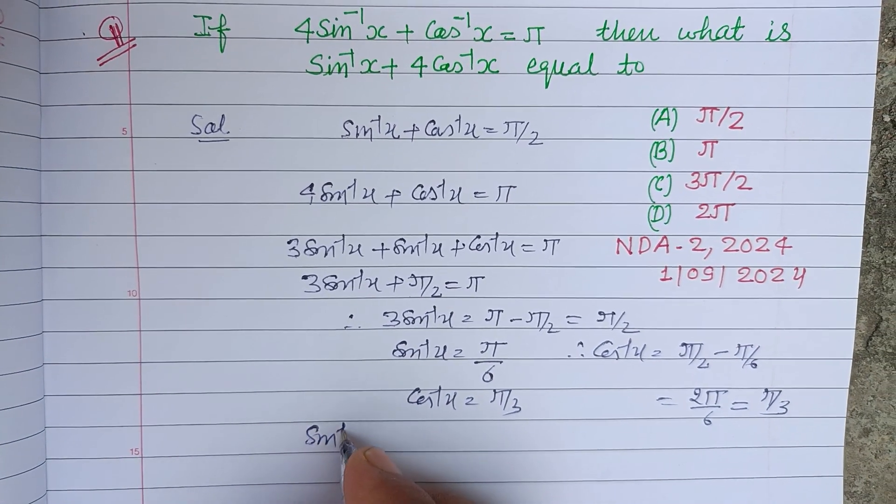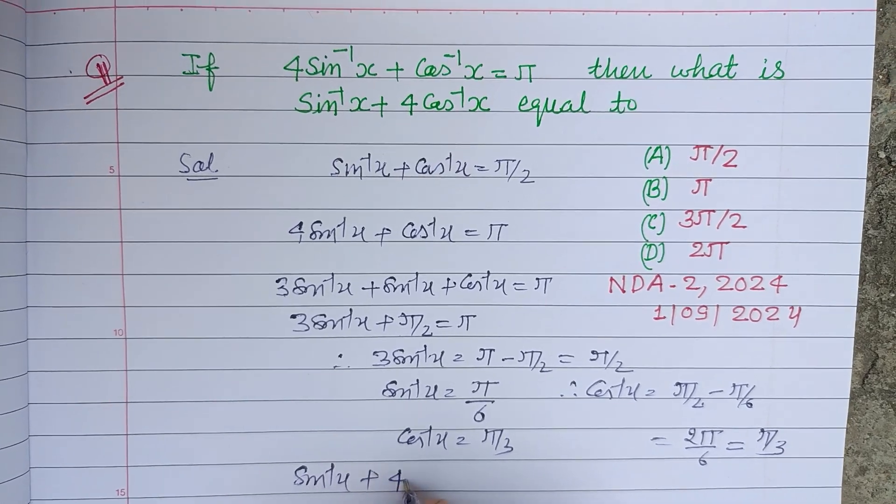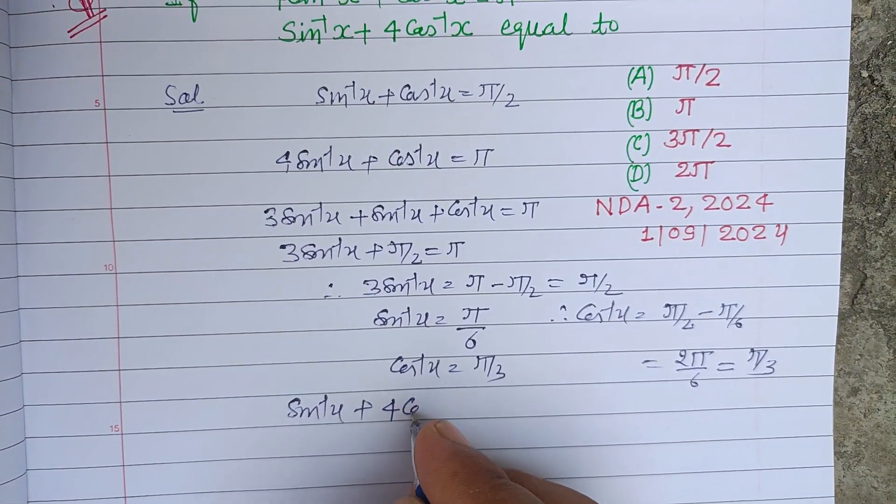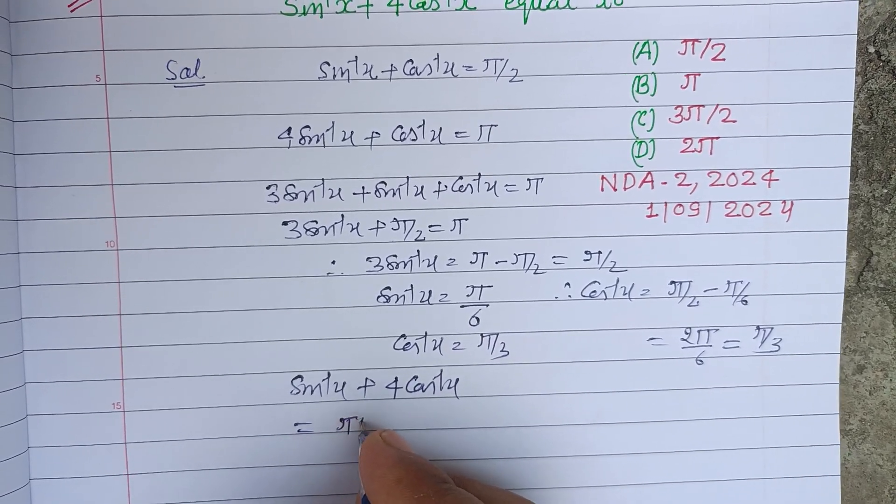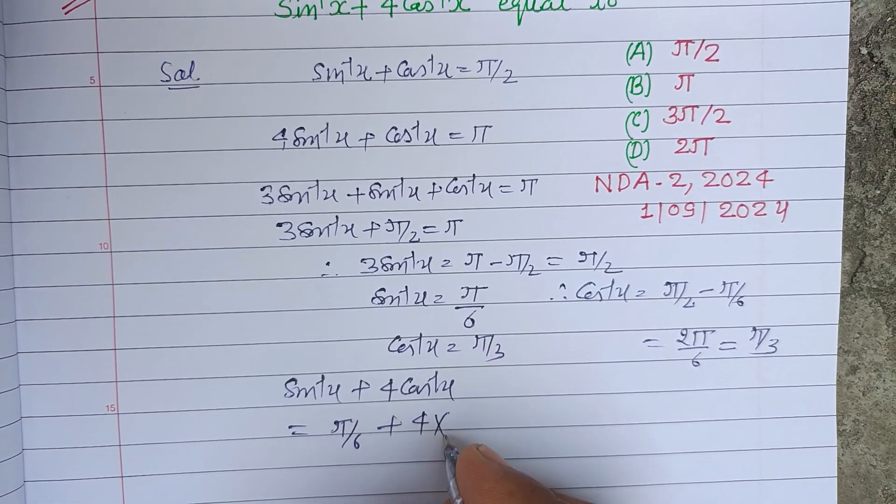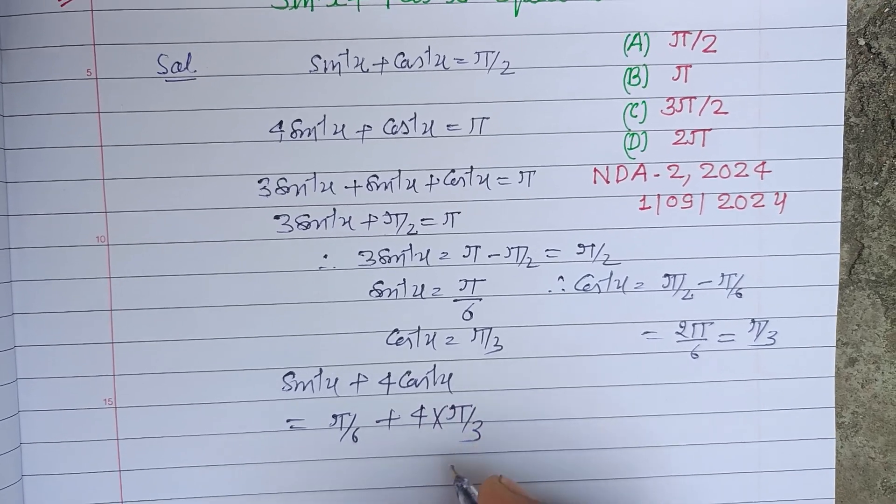Now the question is asking the value of sin⁻¹x + 4cos⁻¹x, so sin⁻¹x is π/6 and cos⁻¹x is π/3.